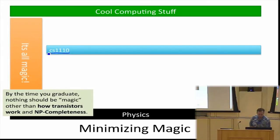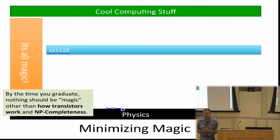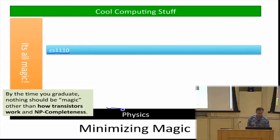At the bottom layer, depending on whether you're in computer engineering or computer science, there's some level of physics getting into quantum mechanics — things that I certainly don't understand well enough to explain. We're starting from the level of the transistor, which you can go into a lot of depth on, but I think it's okay if that's still magic. Transistors are pretty magical.